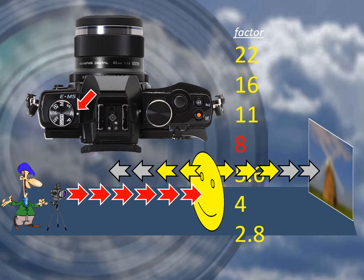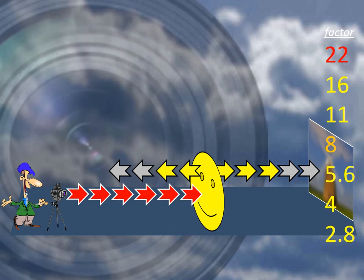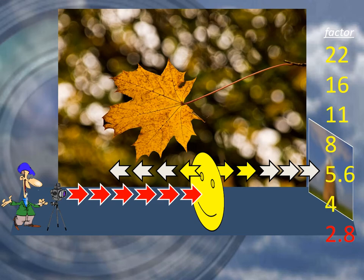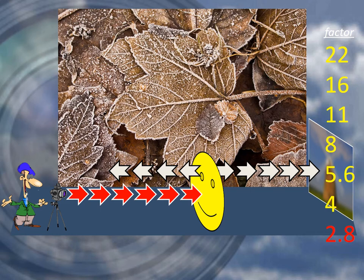First, set the mode dial to aperture priority. A small aperture increases depth of field, allowing more of the image in front of and behind the subject to remain sharp. But increasing the size of the aperture towards f4 and f2.8 does the opposite, decreasing in stages the amount of sharpness down to a narrow band.